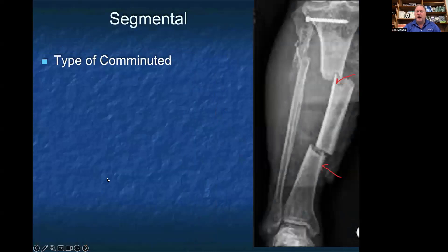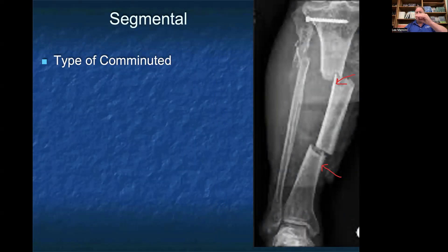One type of comminuted fracture is a segmental fracture. In this case, you can see a segmental fracture of the tibia where there are three distinct fragments: the tibia has been broken into a distal fragment, a middle fragment, and a proximal fragment.